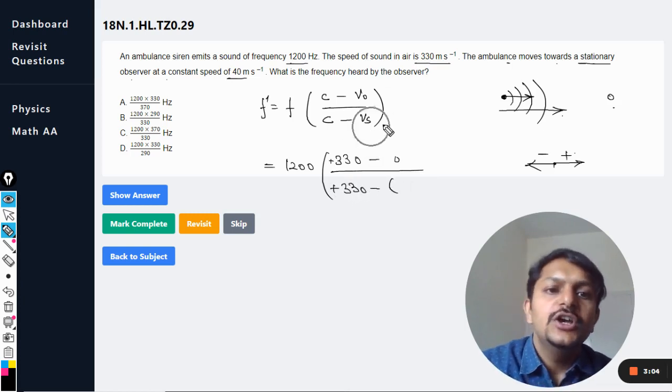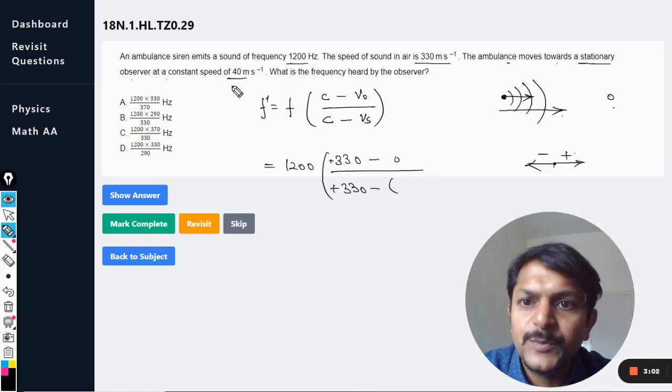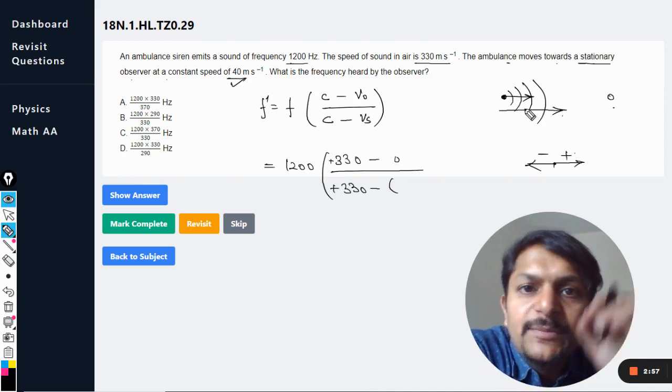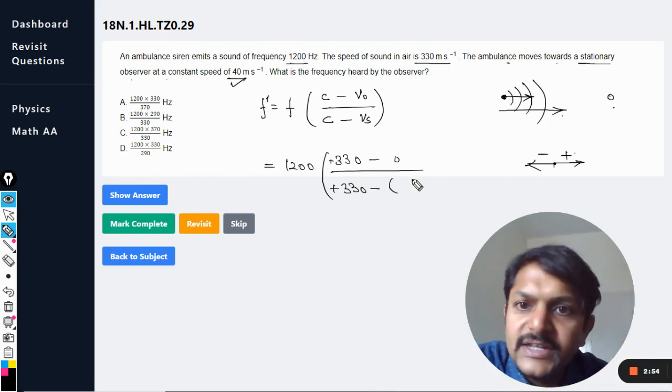Velocity of the source: the source is moving with a speed of 40 meters per second. The ambulance is coming towards the observer, and that is also moving in the positive direction, so it is positive 40.